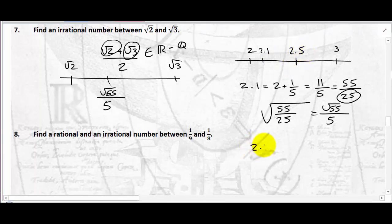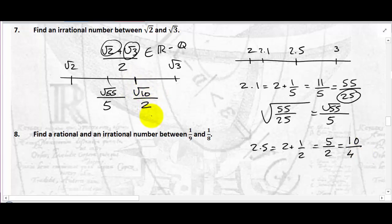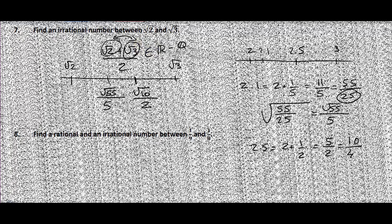Here's another irrational: take 2.5, which equals 5/2. Multiplying both sides by 2 gives 10 over 4 — the denominator is now a perfect square. Taking the square root gives square root of 10 over 2. This is irrational because root 10 is irrational, and dividing an irrational by 2 or by 5 also gives an irrational — that's easy to show. Adding two irrationals together is less straightforward to verify, but we'll get to that. That's it for this video — thank you for watching.